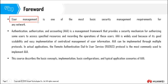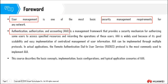User management is one of the most basic security management requirements for any network. AAA — authentication, authorization, and accounting — is a management framework that provides a security mechanism for authorizing some users to access specified resources and recording the operations of these users. Accounting is what we call recording the operations of what you've been able to access: for how long, at which time, and so on.